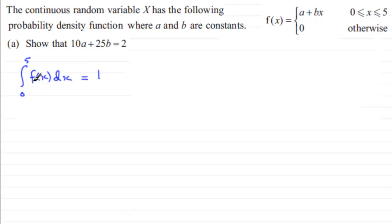Now we know what f of X is. It's A plus BX over this interval. So therefore we've got the integral going from 0 to 5 of A plus BX integrated with respect to X is going to equal 1.